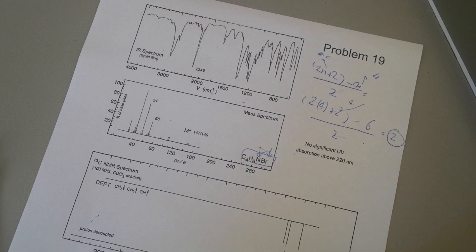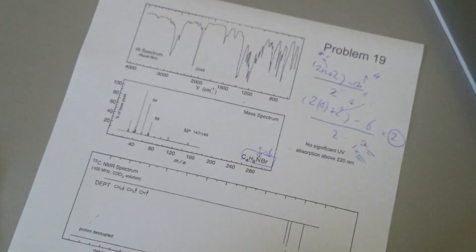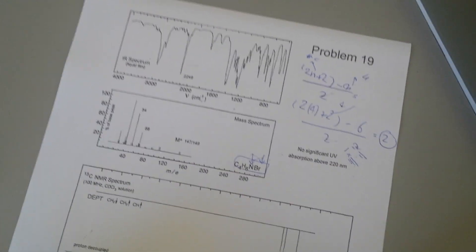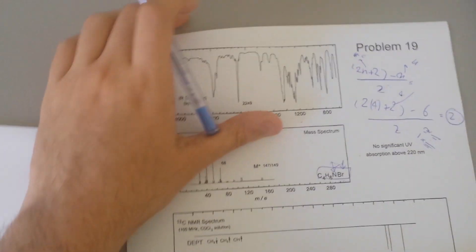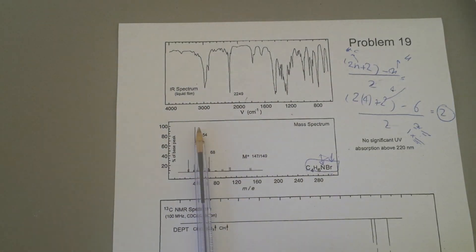So then it means they can be either two C double bonds or one triple bond. Now then we're going to go back to IR spectroscopy, our good friend. I really like that. It's very easy and it tells you a lot of things.